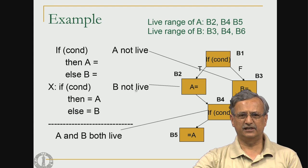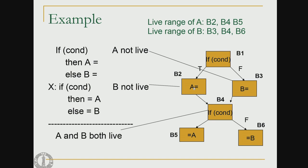Let us look at an example. In this flow graph, variable a is defined and used at specific points, and variable b is similarly defined and used. At the point where a is used, it is live; the same holds for b. The live range of a starts from its definition through the blocks where it is used — blocks b2 and b4 constitute the live range of a. Similarly, b3, b4, and b6 constitute the live range of variable b.